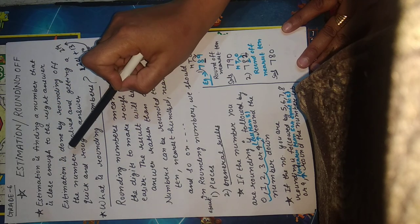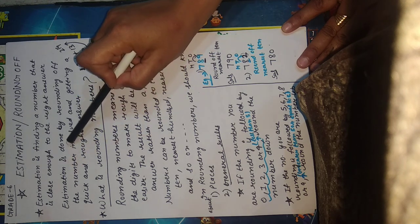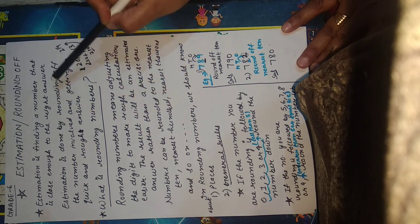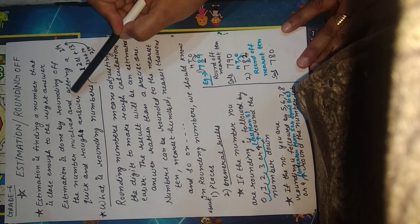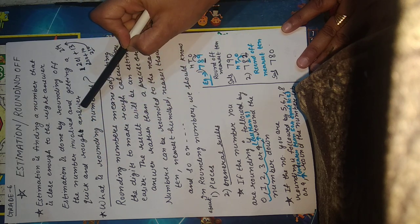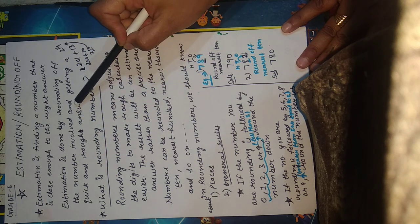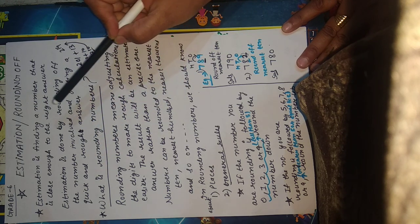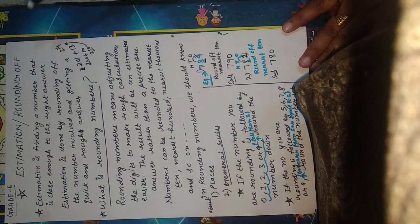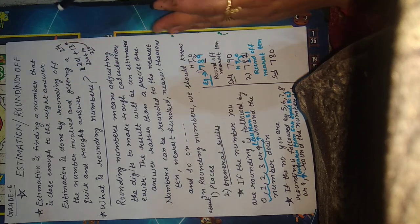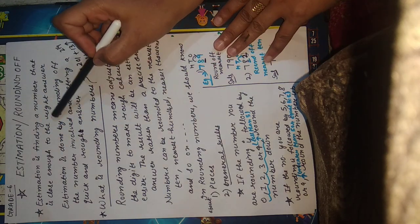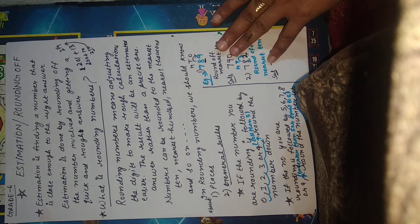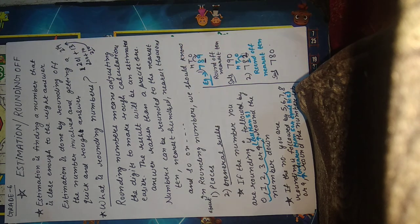How is estimation done? Estimation is done by rounding off the numbers involved and getting a quick and rough answer. In simple words, estimation is finding a number that is close enough to the right answer. Let's understand this concept with an example.